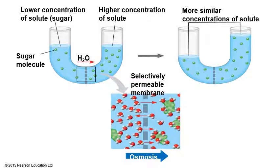When enough time is allowed, water level rises on the right side (higher solute concentration) and goes down on the left side (lower solute concentration). That's osmosis — it happens by water's own concentration gradient, from water's higher concentration through the membrane to lower concentration.